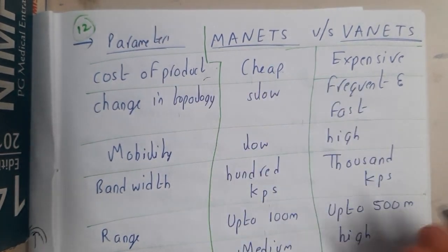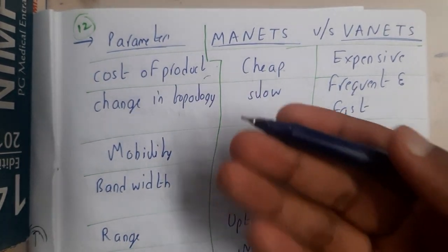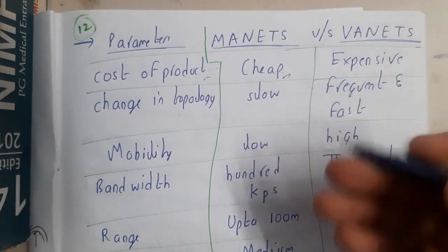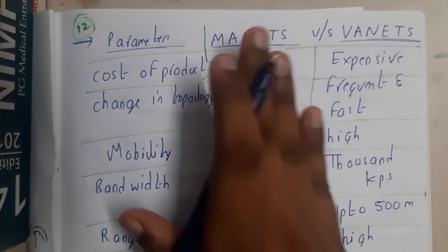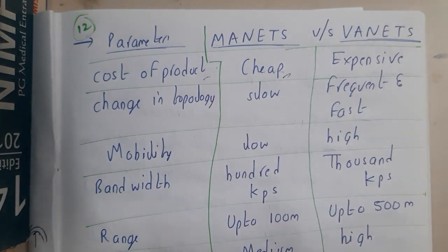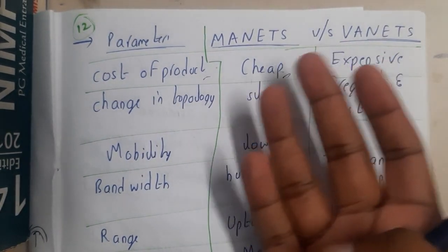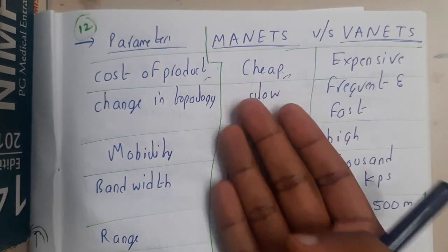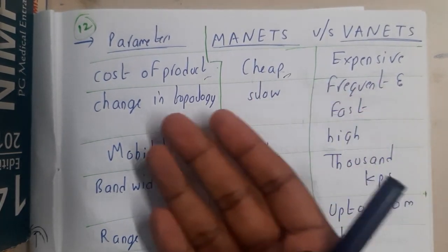If you consider the cost, a normal mobile phone is relatively low cost. But when you compare it to a vehicle — for example, a Tesla car costs a lot — so MANETs are cheap whereas VANETs are expensive.